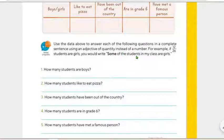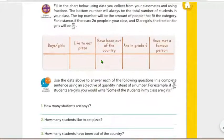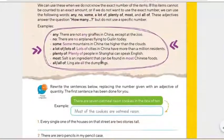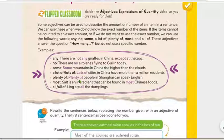Entonces, dice aquí que, por ejemplo, si 12 personas de 26 en mi salón son niñas, escribiría, algunos de los estudiantes en mi salón son niñas. Recuerda, ya vamos a utilizar estas palabras que vimos. Any, no, some, lots of, plenty of, most, and all, right?